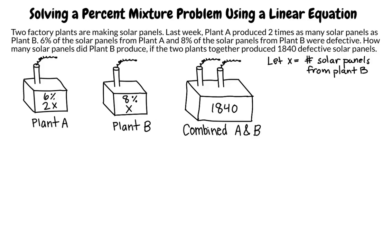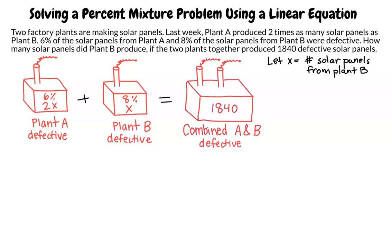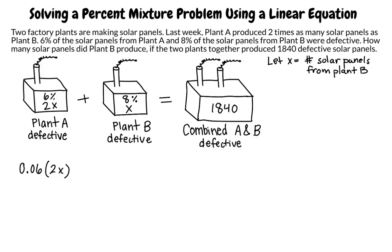We will write our general equation in terms of defective panels: defective panels at plant A plus defective panels at plant B equals total defective panels of both plants. To determine the amount of defective panels for each case, we multiply the percent defective by the total number of panels. For plant A, we write 0.06 times 2x. For plant B, it would be 0.08 times x. And for the combined total, we write 1840, since we were already given that value.